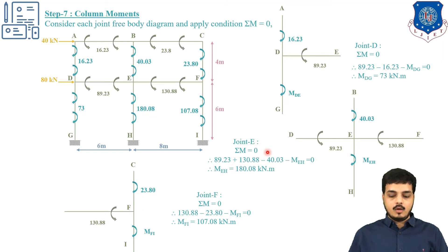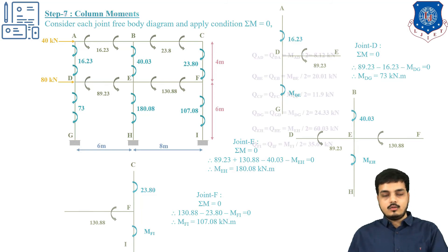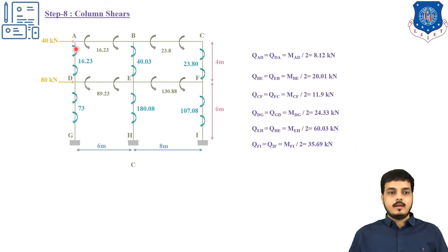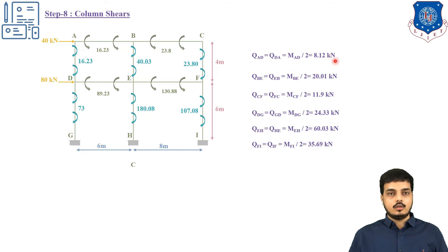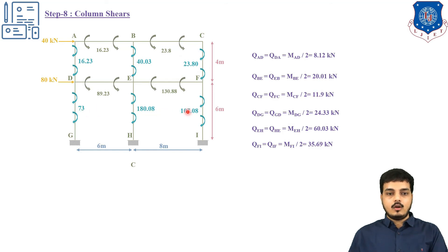Step 8 finds column shear. Column shear equals column moment divided by half the column height. For column AD: QAD = QDA = MAD/2 = 16.23/2 = 8.12 kN. For column BE: 40.03/2 = 20.01 kN. For column CF: 23.80/2 = 11.9 kN. Similarly, column shears for the lower story are calculated.